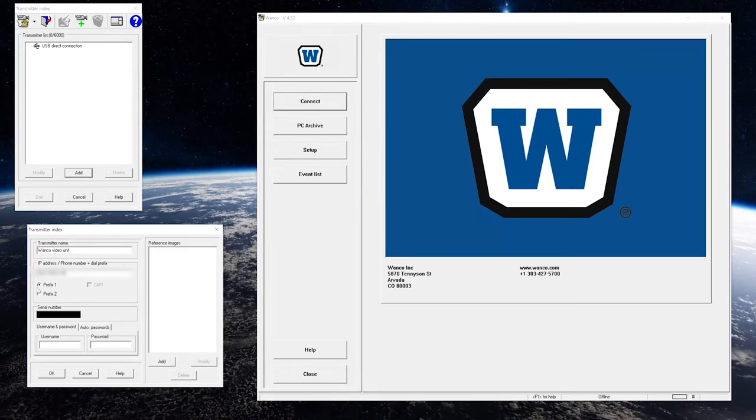Okay, we got the IP in there and we got a username and password. This is optional - we usually send it at the factory blank, but for this video we're just going to call it Wanco and Wanco and hit OK.